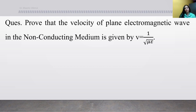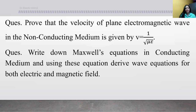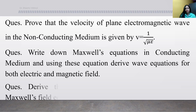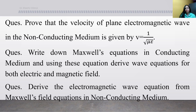Prove that velocity of plane electromagnetic wave in non-conducting medium is given by V equal to 1 upon under root mu epsilon. Write down Maxwell equations in conducting medium, and derive an equation for both electric and magnetic field. Also derive the electromagnetic wave equation from Maxwell field equations in non-conducting medium.